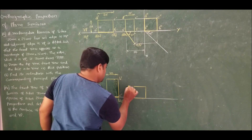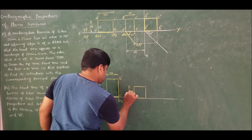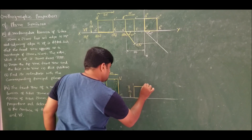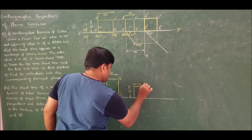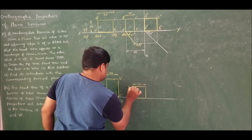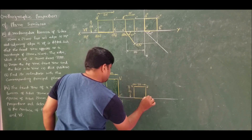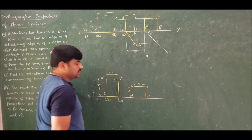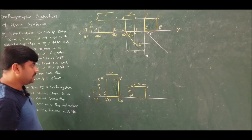Here this dimension is again 20 and this dimension is also 20. So this is a', b', c', d'.